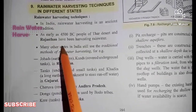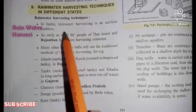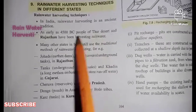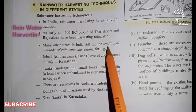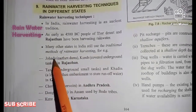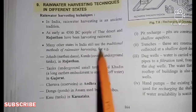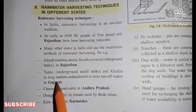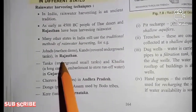These techniques evolved in particular areas. Speaking about Rajasthan, from 4500 BC onwards people had developed rainwater harvesting because it was a dry desert region. Many other states in India still follow some of the traditional methods of rainwater harvesting. These methods include Johars, which are earthen dams, and Kunds, which are covered underground tanks. These methods are mostly found in Rajasthan, where they have been used since ancient times.